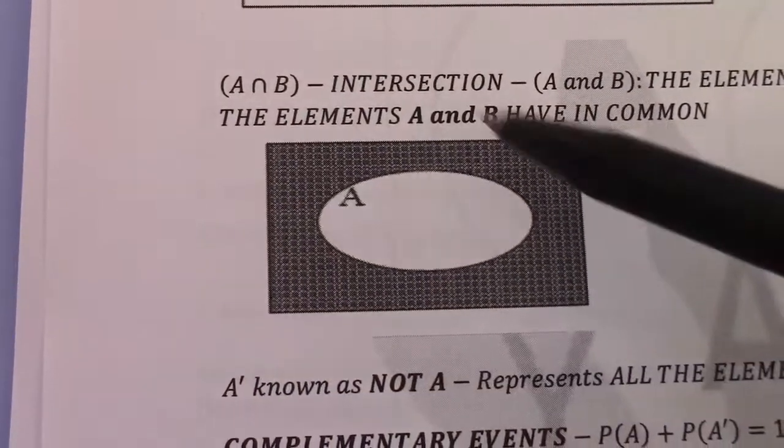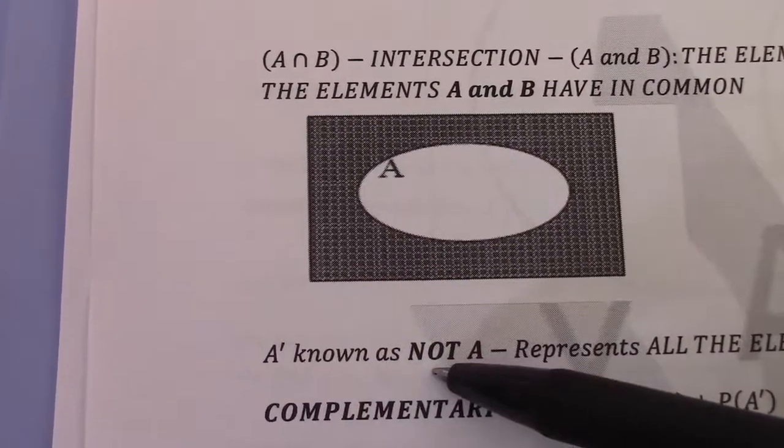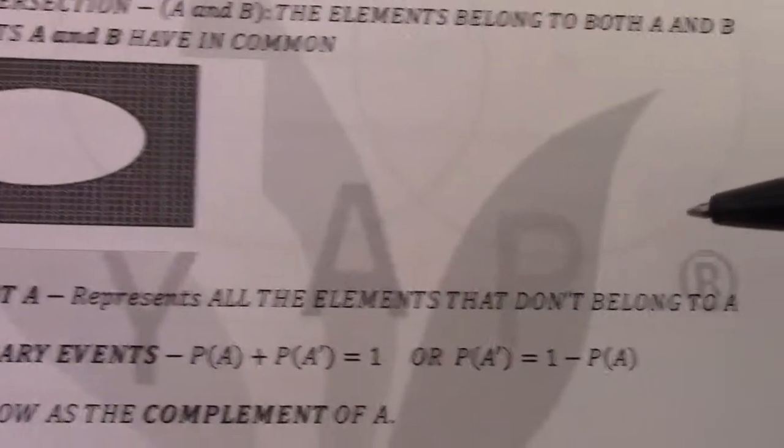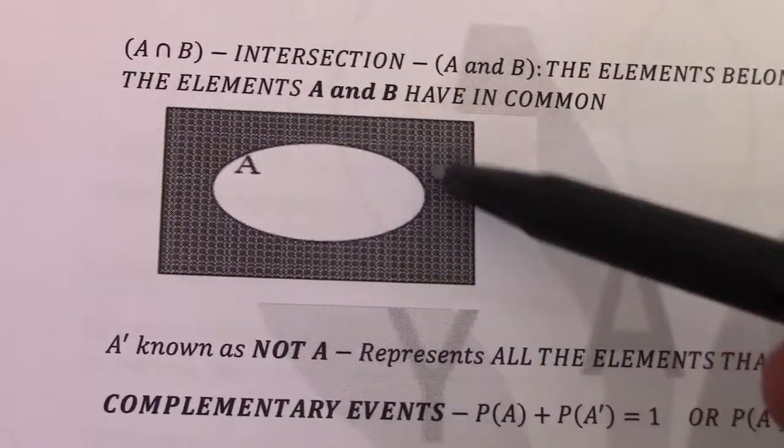If we take the shaded area there, that is known as not A. It represents all the elements that don't belong to A, so everything that doesn't belong to A is on the outside.